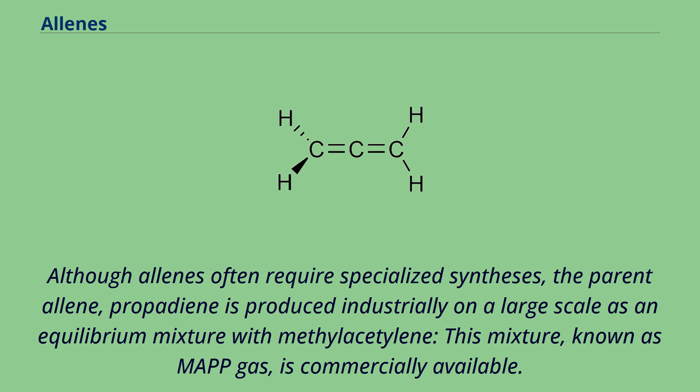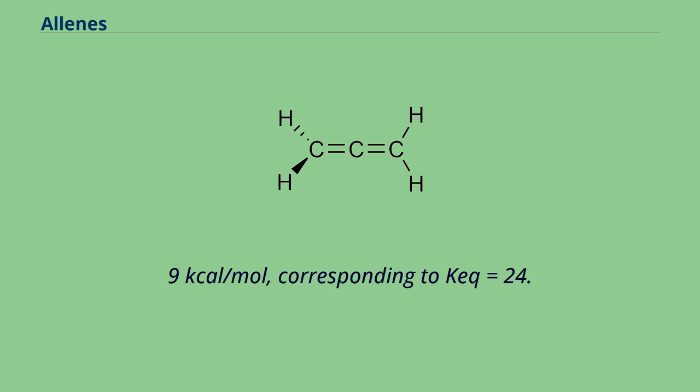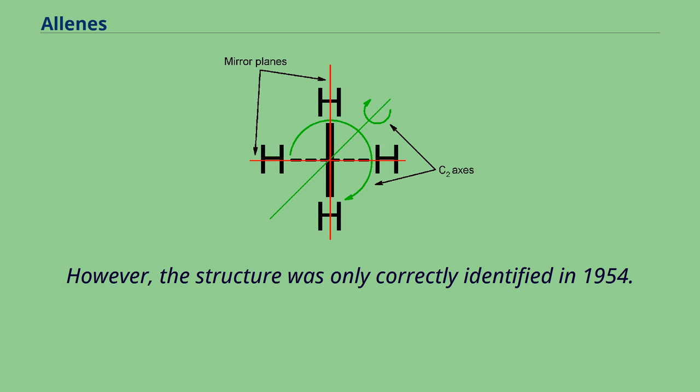At 298 K, the ΔG° of this reaction is -1.9 kcal/mol, corresponding to K = 24.7. The first allene to be synthesized was penta-2,3-dienedioic acid, which was prepared by Burton and Peckham in 1887. However, the structure was only correctly identified in 1954.